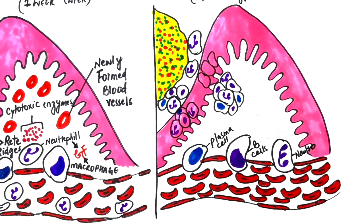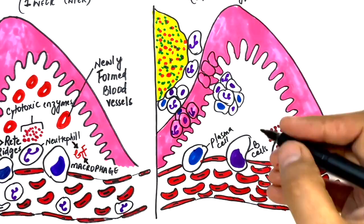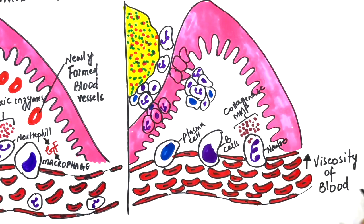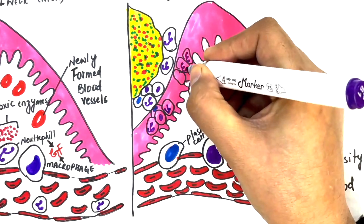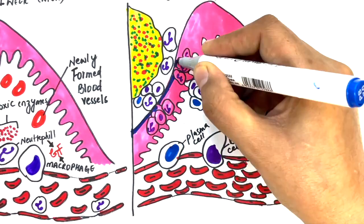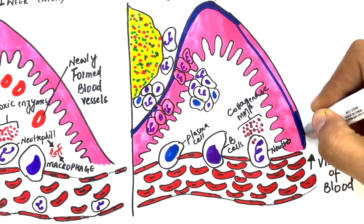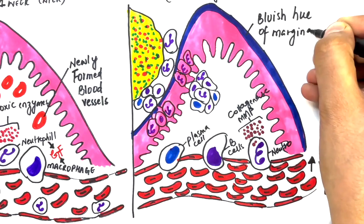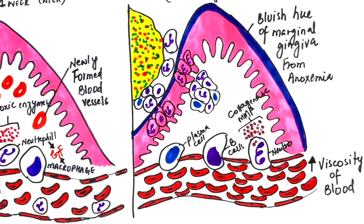The neutrophils, as they migrate through the dense collagen fiber bundles, release matrix metalloproteins and collagenase enzymes. These enzymes cause further destruction of the collagen fiber bundles. The continuous leakage of plasma proteins from the blood vessels causes an increased viscosity of the blood, hence reducing the blood flow in the region. The reduction in blood flow causes anoxemia in the region, which gives the marginal gingiva a bluish hue in this established stage.